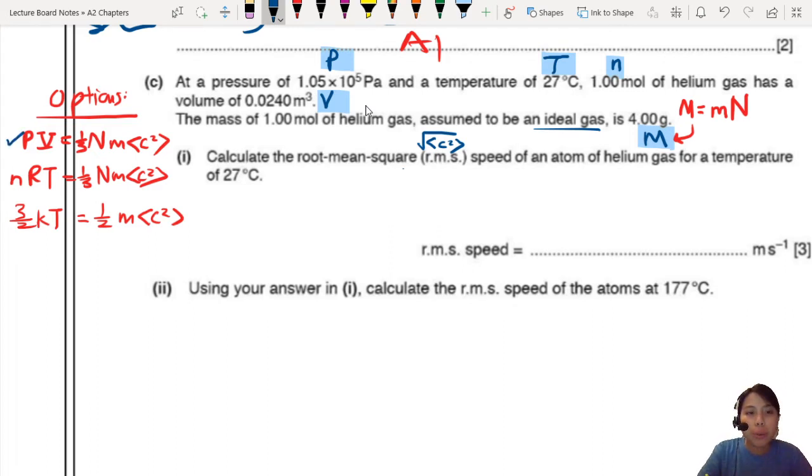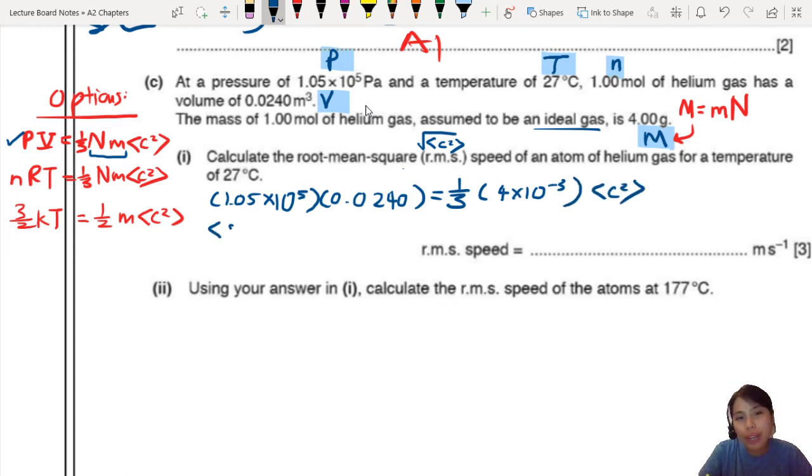So, PV equals to 1 over 3 NMC squared. Pressure is 1.05 times 10 to the 5. V. Already in volumes. Very nice. No need to change. It goes to 1 over 3. Now, NM is going to be the total mass of this whole sample. So, that will be NM. This one combined together will give me 4 grams, which is 4 times 10 to the negative 3 kg. Then, C squared. So, we rearrange to find C squared. So, C squared will give me about 1.89 times 10 to the 6 meter square second negative 2.